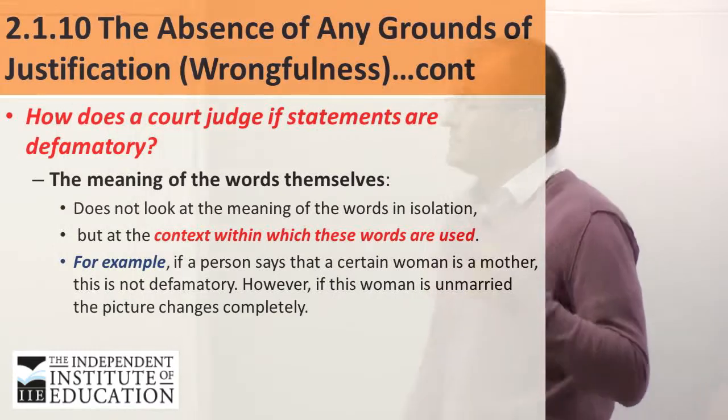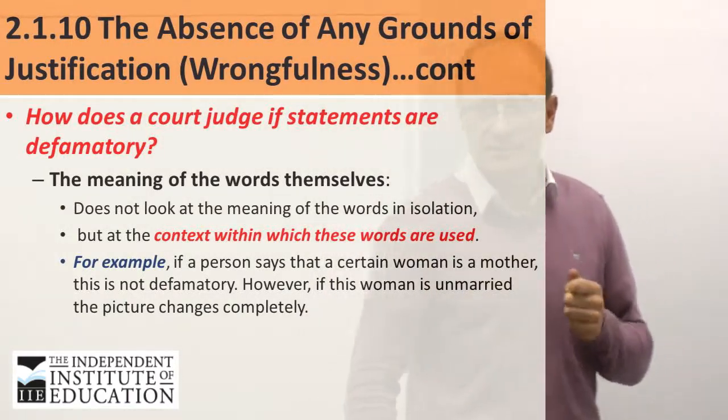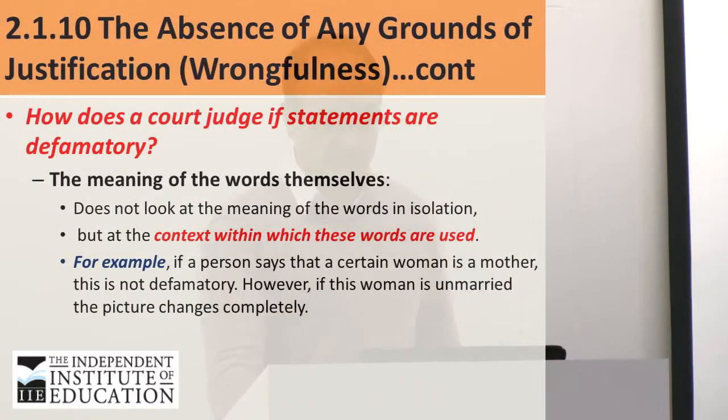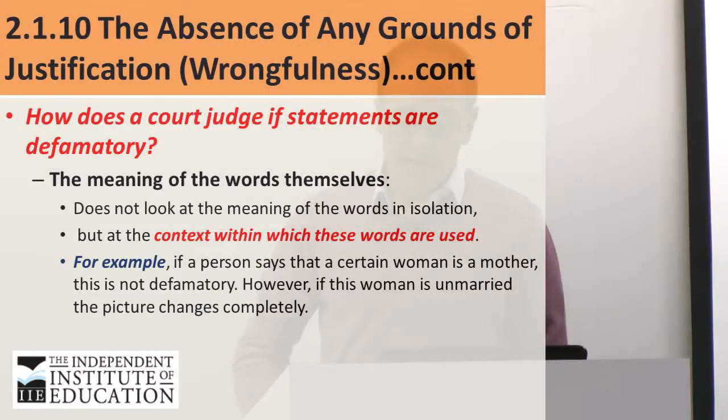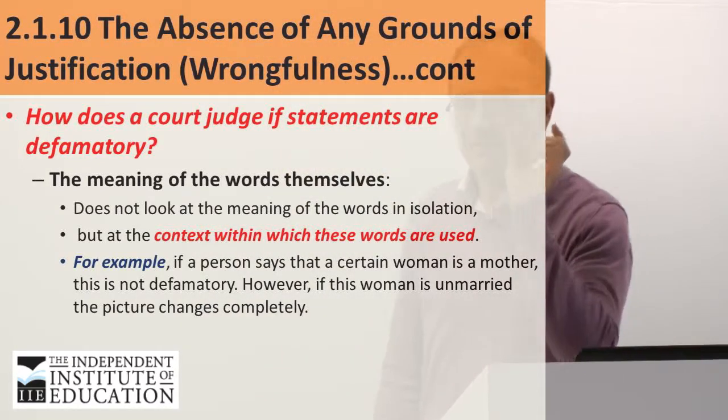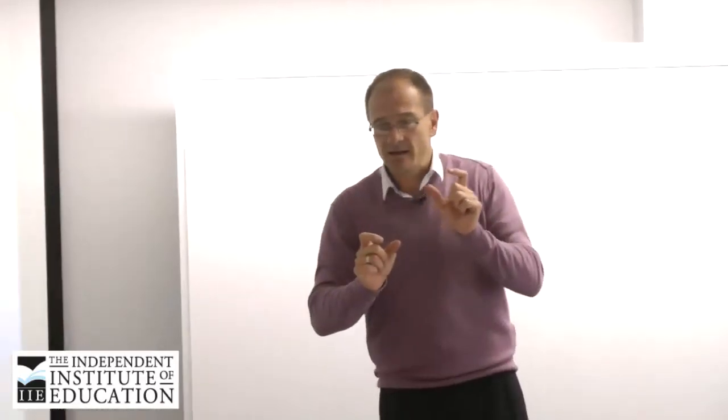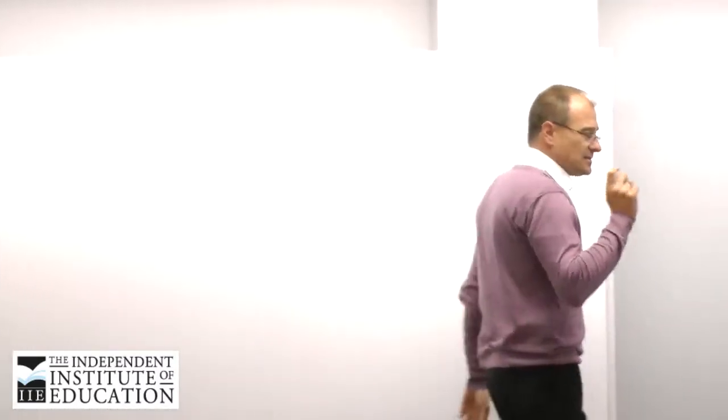What the judge is going to do is look at the meaning of the words themselves. He does not look at the meaning of the words in isolation. Certain people only look at two or three words in a paragraph and then say there's defamation — that's not what a judge does. What he does is look at the words not in isolation, but in the whole context within which these words are used. So he would look at the whole paragraph or the whole article, not only certain words in there.